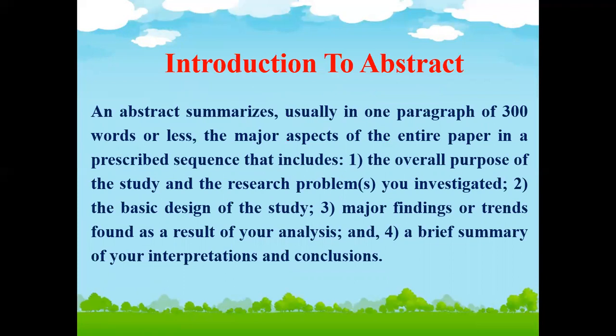Introduction to abstract. An abstract summarizes, usually one paragraph of 300 words or less, the major aspects of the entire paper in a prescribed sequence that includes: number one, the overall purpose of the study and research problems you investigated; number two, the basic design of the study; number three, major findings or trends found as the result of your analysis; and number four, a brief summary of your interpretation and conclusions.